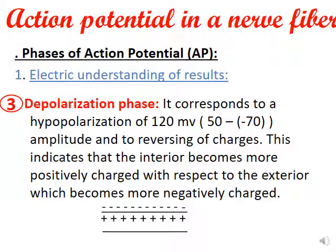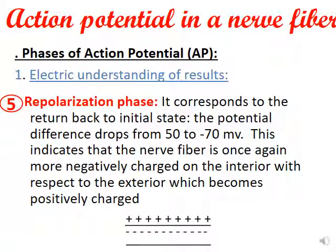Repolarization is going back to the negative. It corresponds to the return to the initial state where the potential difference drops from plus 50 to minus 70 millivolts — this is phase five in the graph. This means the interior of the nerve fiber is more negatively charged with respect to the exterior, which becomes more positively charged.